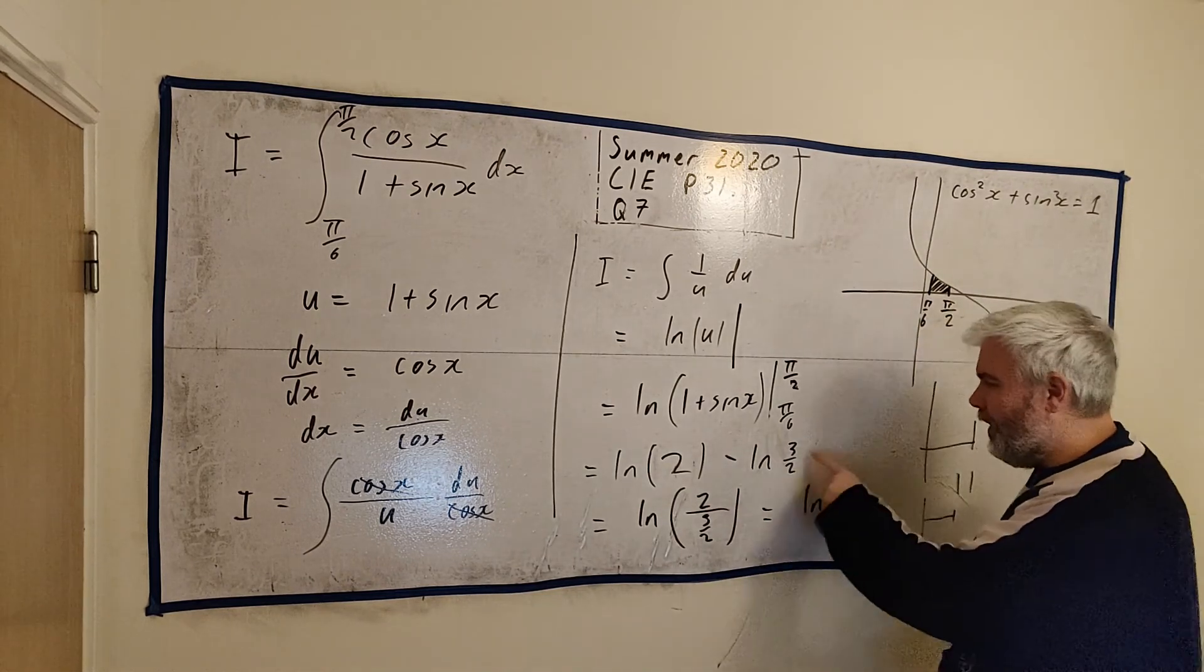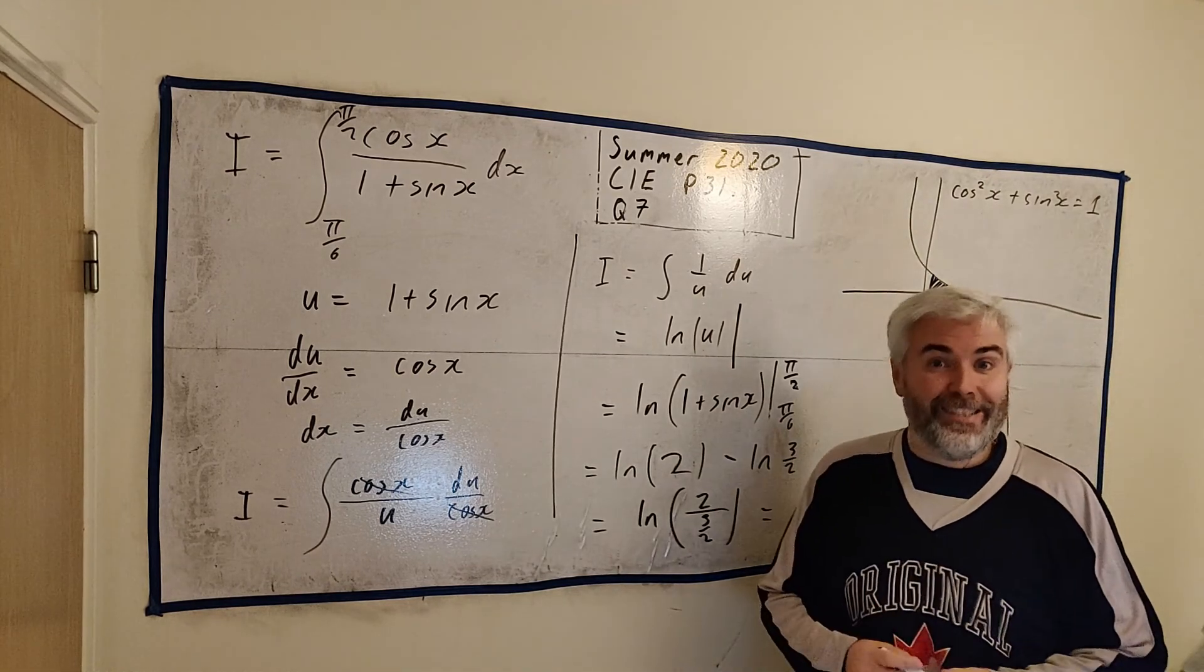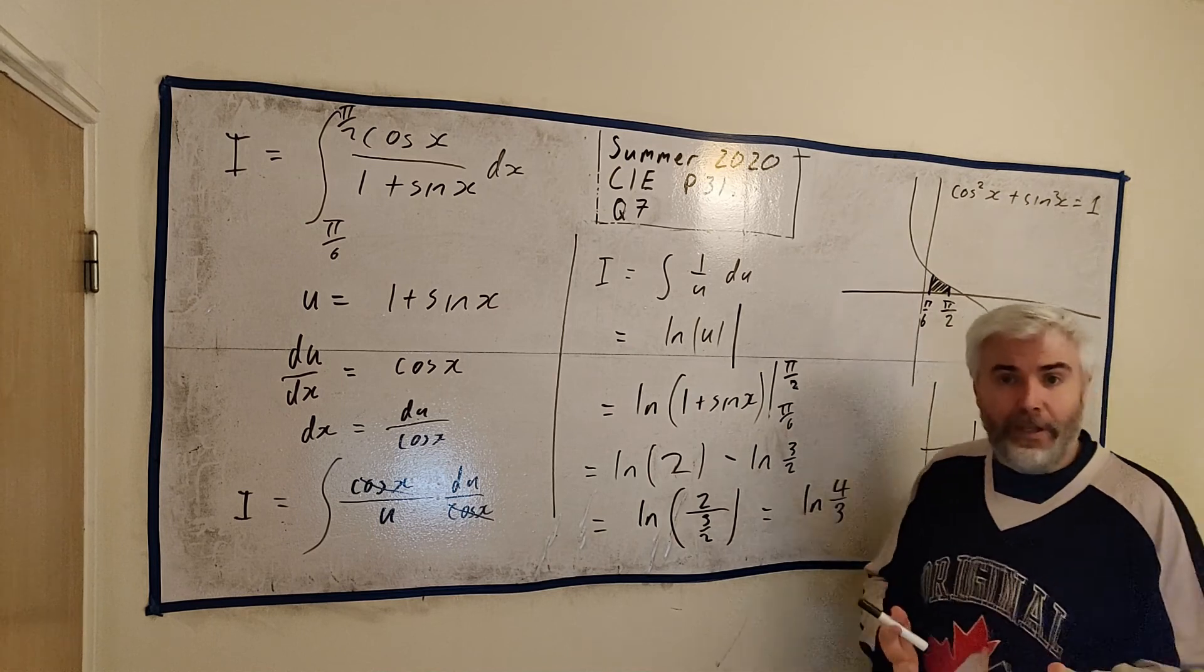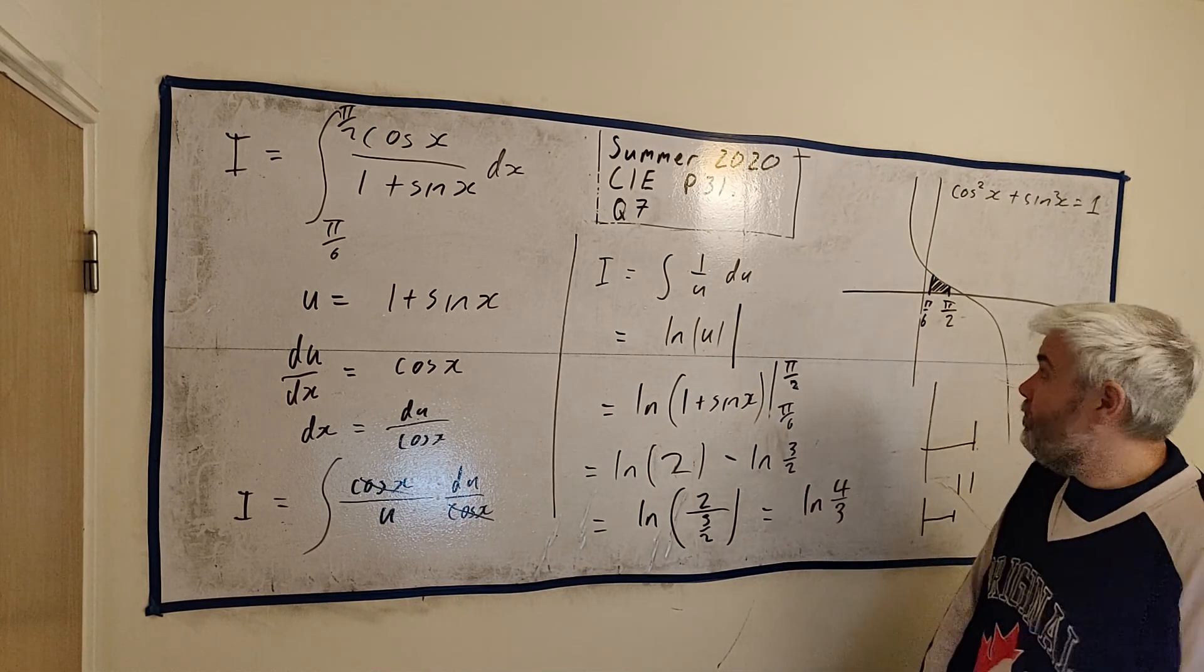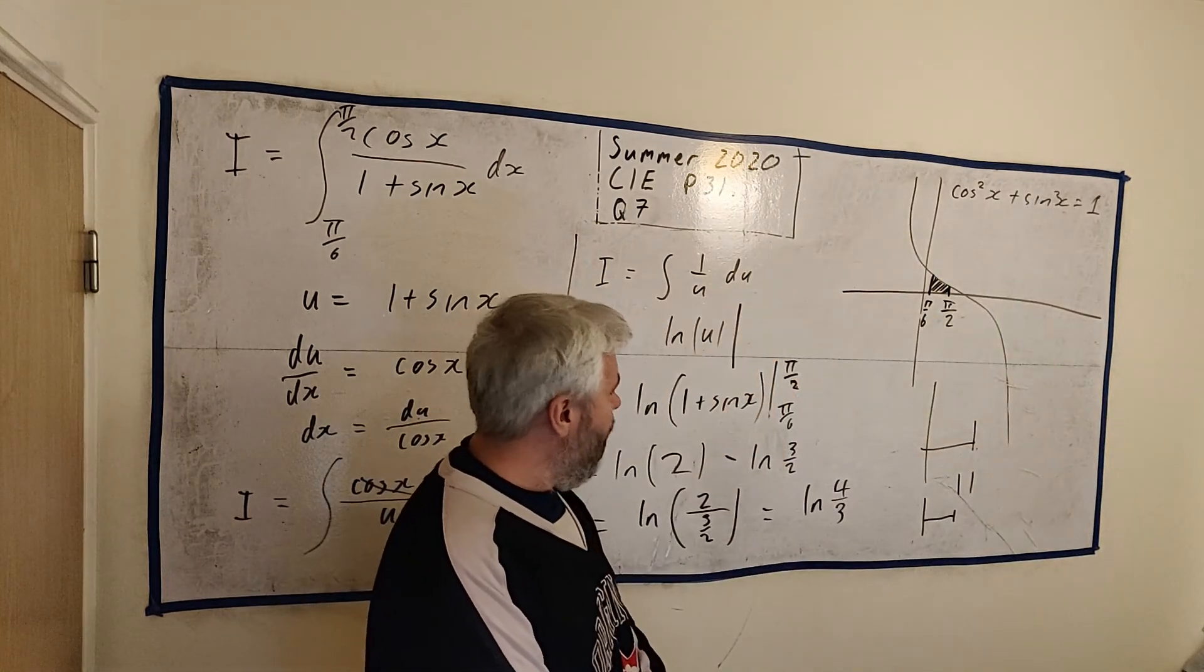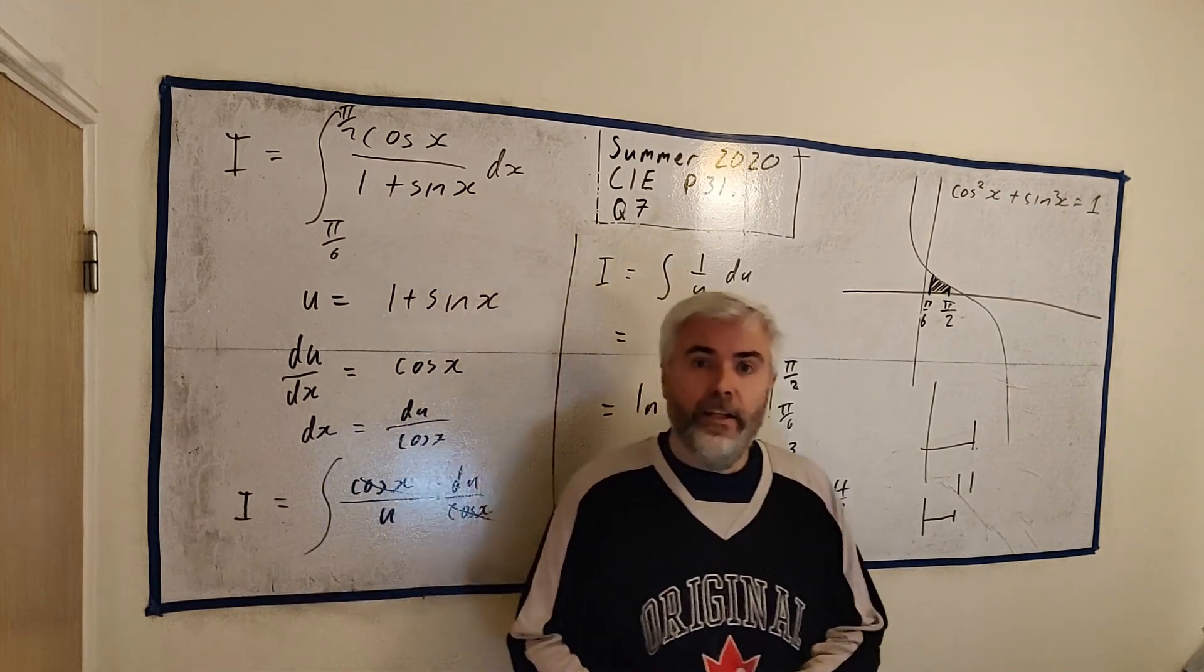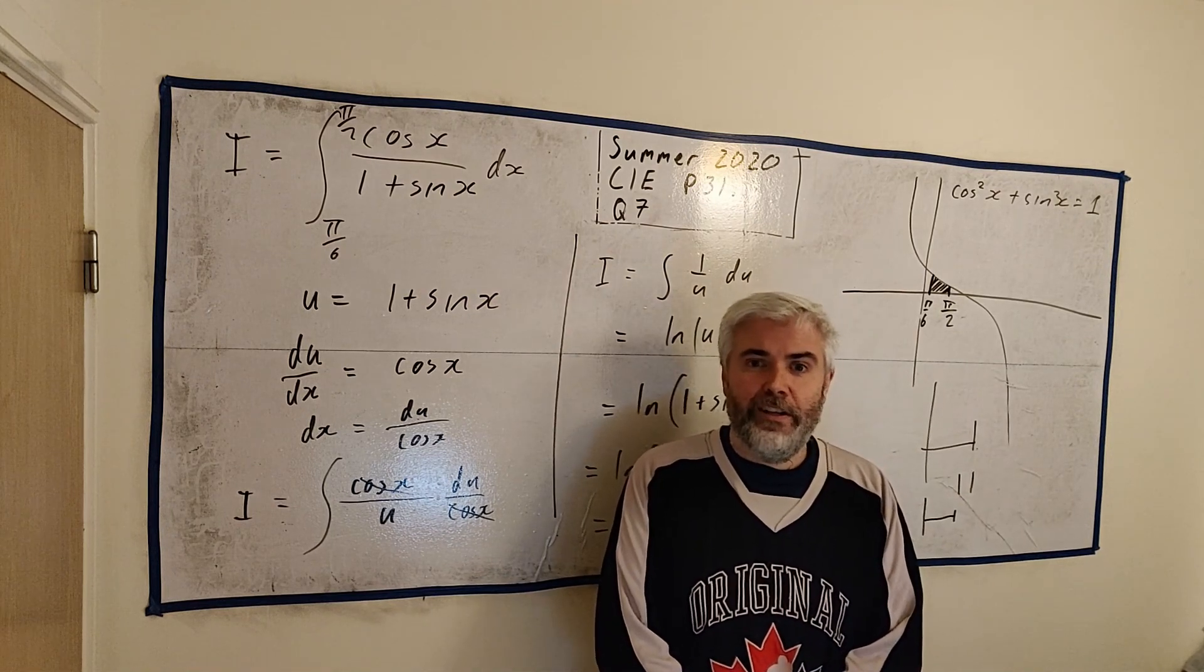But if you put that into a calculator, this or this into a calculator, that would not be the exact answer. You'd have to give a certain number of decimal places. They want to see this as an exact answer. You give them decimal places after putting one of these in a calculator, they'll give you some of the marks, most of the marks, but they will take some away. I hope that answers all your questions. If you have any follow-up questions or anything I've made a mistake in, put them in the comments below and I'll do my best to answer. Thanks for watching. Have a great day.